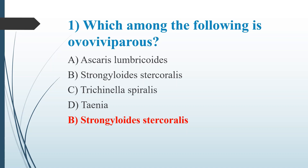Strongyloides stercoralis is also known as threadworm. For other options: Ascaris lumbricoides — mature Ascaris females can lay up to 2 lakh eggs per day. Trichinella spiralis is a viviparous nematode — it gives rise directly to larvae. In Taenia, embryonated eggs called oncospheres are released with feces.